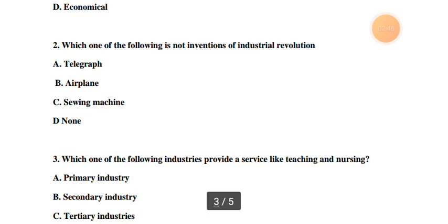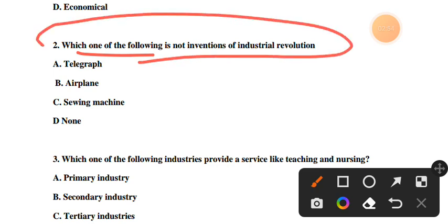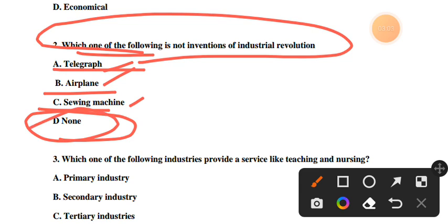Number two: Which of the following is not the invention of industrial revolution? The options are: telegraph, airplane, sewing machine. The answer is airplane - it is not an invention of the first industrial revolution. Sewing machines were part of the industrial revolution, so the correct answer is airplane.